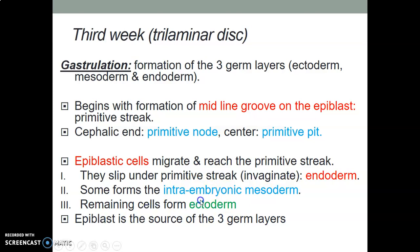Lastly, the remaining epiblastic cells form the ectoderm. So the epiblast is generally the source of the three germ layers. They migrate, reach the primitive streak, slip under it and form endoderm; a second wave forms intraembryonic mesoderm; and the remaining form ectoderm. Remember, we previously discussed extraembryonic mesoderm formed from epiblastic and hypoblastic cells. Here we are discussing intraembryonic mesoderm, which is the second wave from epiblastic cells.